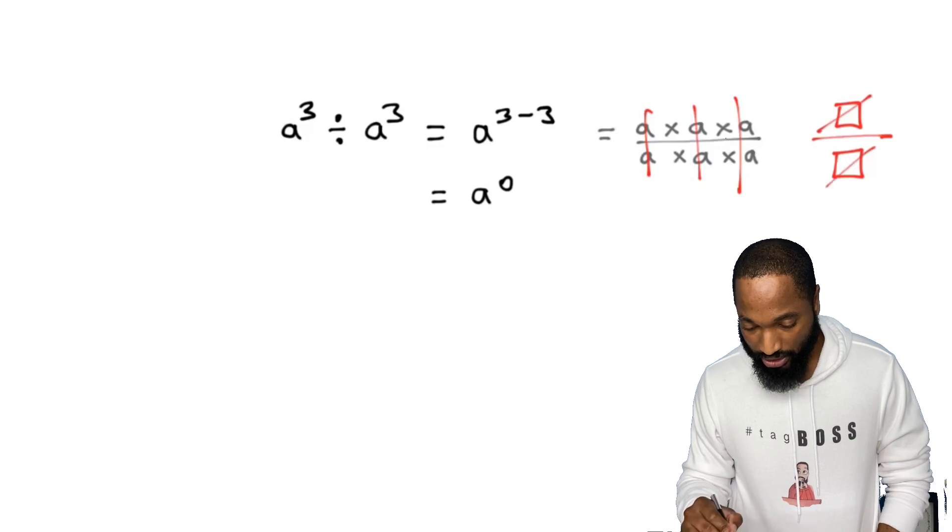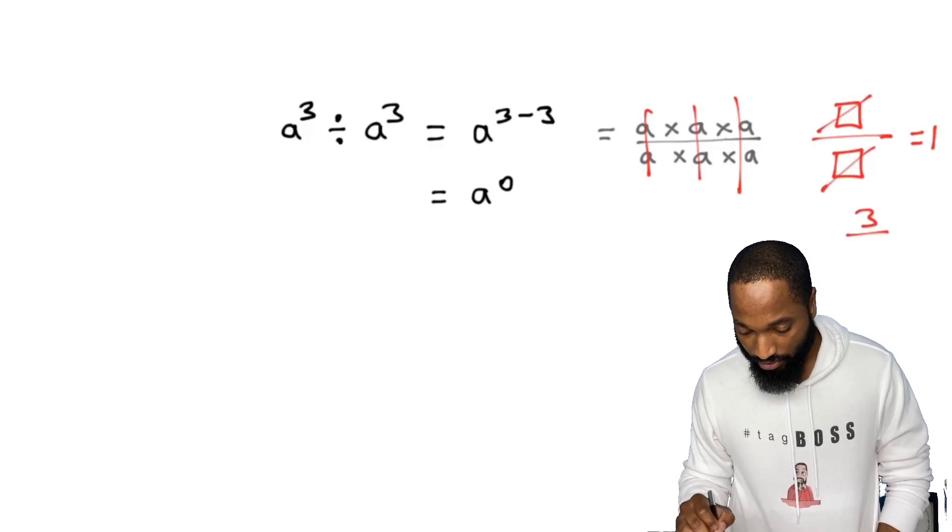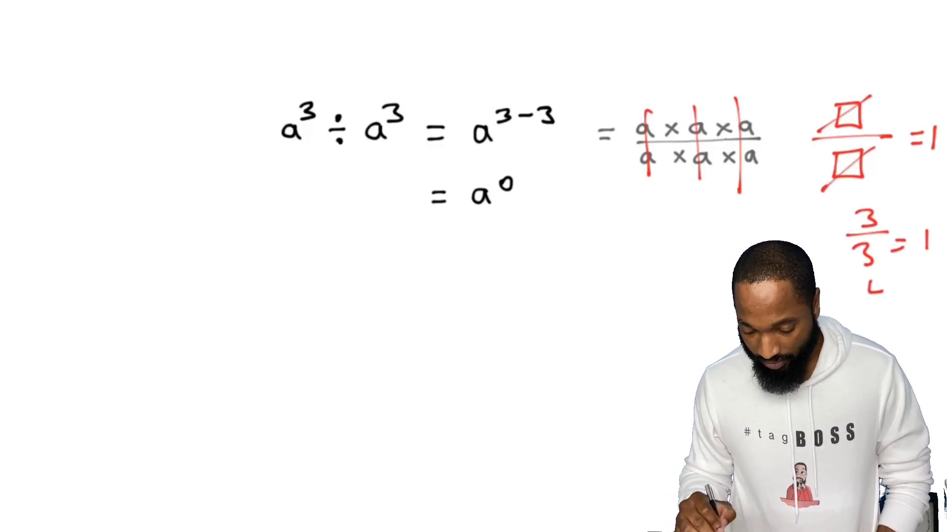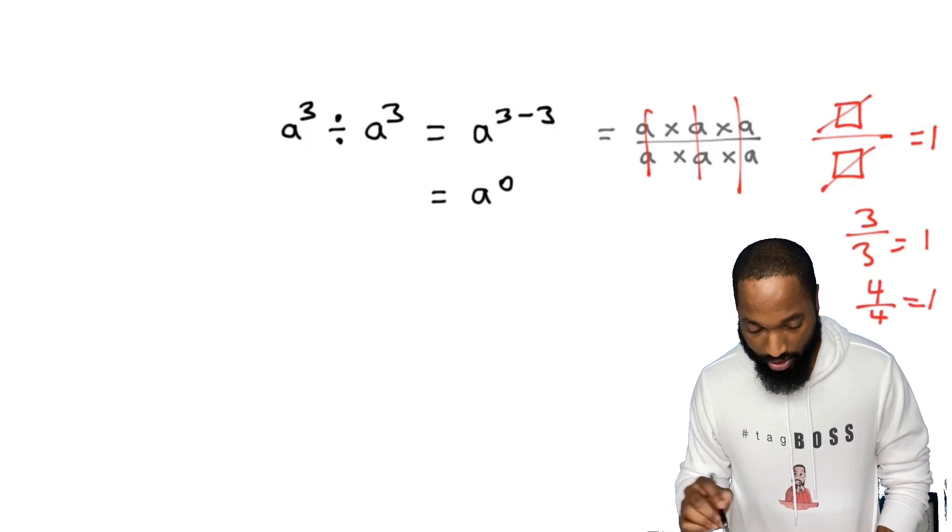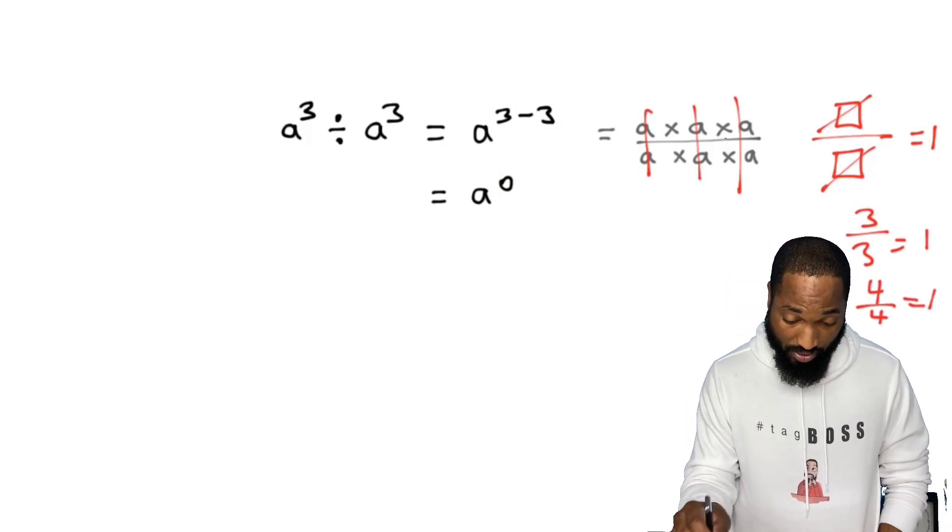Cross out, and we know if we have the same thing on the top and the same thing on the bottom and you cross it out, you're going to end up with one. Three divided by three is one. So a to the power of zero is one.